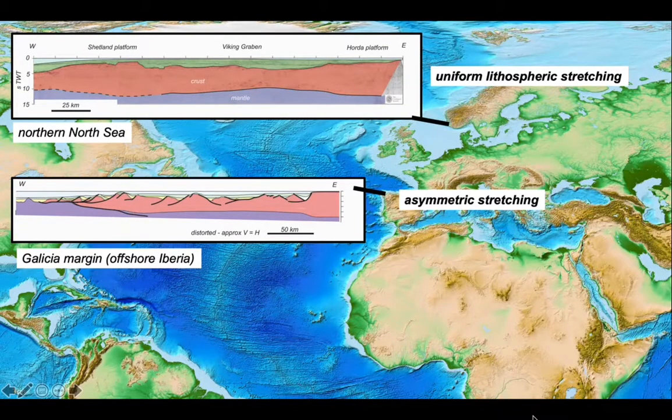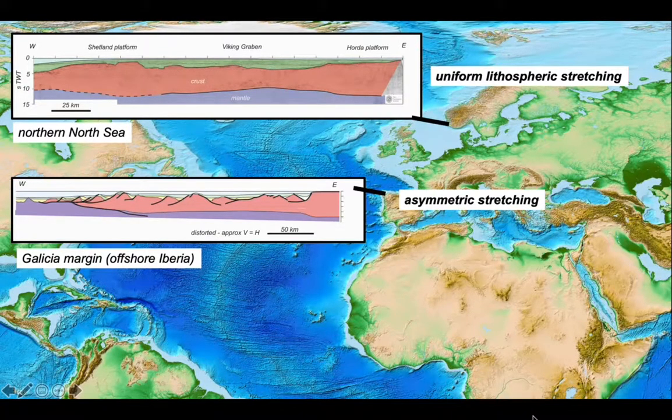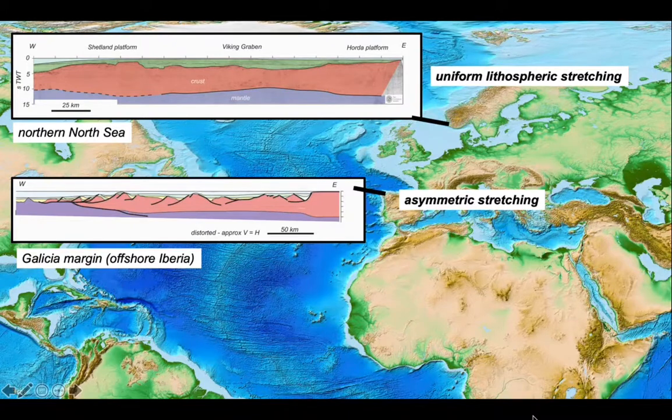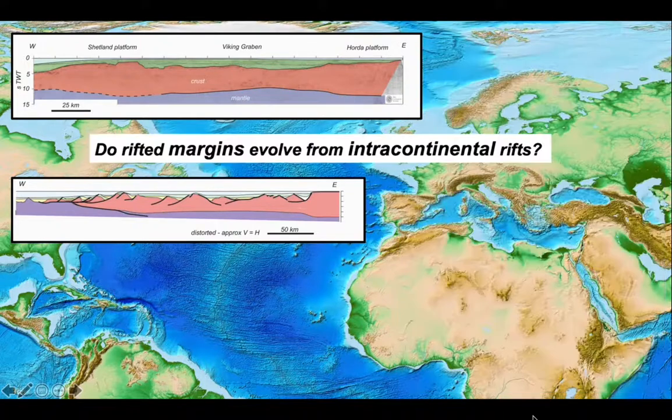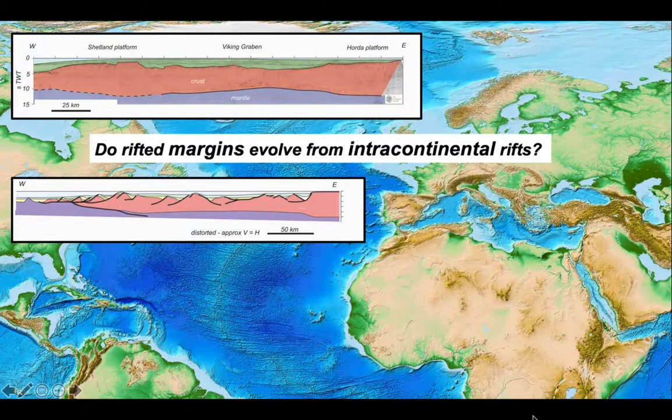It looks like uniform lithospheric extension can explain the structure of intracratonic basins such as the North Sea, but a different model needs to be applied when we look at rifted continental margins. There's an extension discrepancy in these rifted margins. Are we dealing with different styles of continental extension? And more critically, do rifted margins really evolve from intracratonic rifts at all?